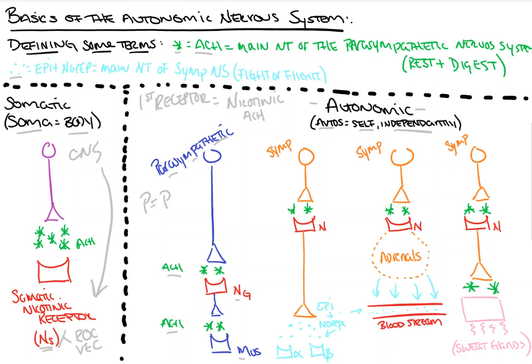These other three pathways are sympathetic pathways, underlined here in gray. Our sympathetic pathways are our fight-or-flight responses. Just like I mentioned before, the first receptor in all of these is going to be our nicotinic receptor, and they're all going to have acetylcholine as their first neurotransmitter. Our first sympathetic chain, the one right next to our parasympathetic, goes to all the same places that our parasympathetic does in order to counteract the effect. The second neurotransmitter in the next pathway is epinephrine and norepinephrine — the main neurotransmitter of our sympathetic nervous system — and that interacts with our alpha and beta receptors.